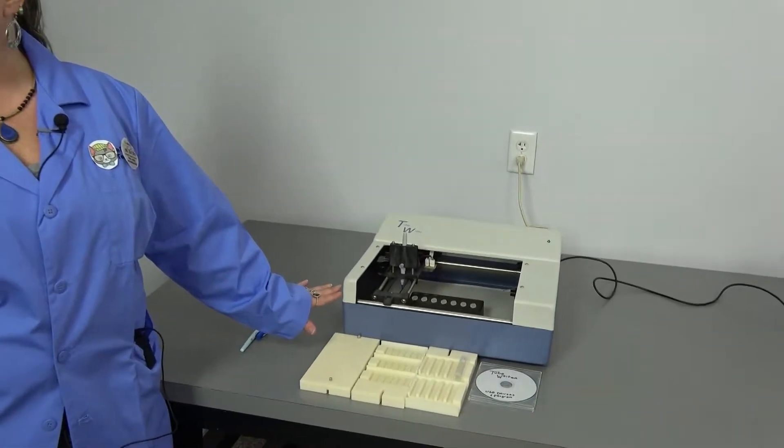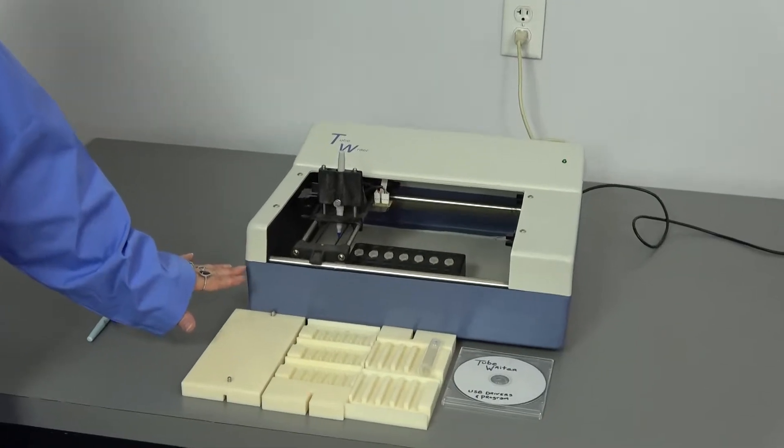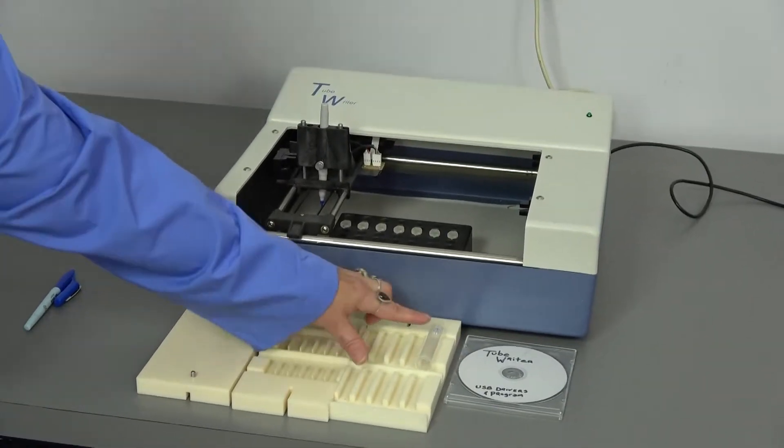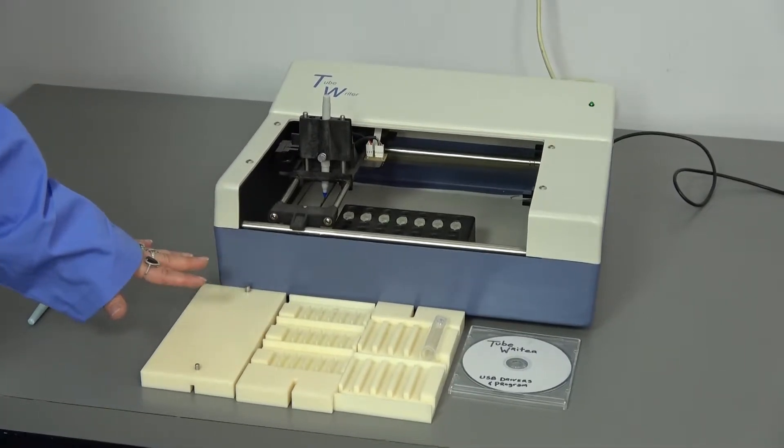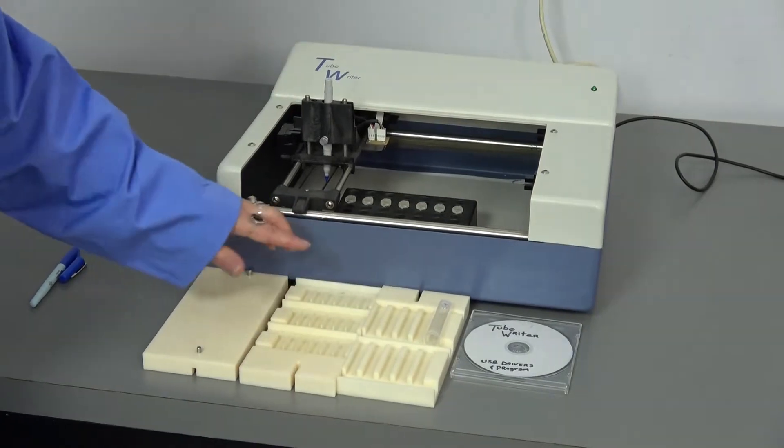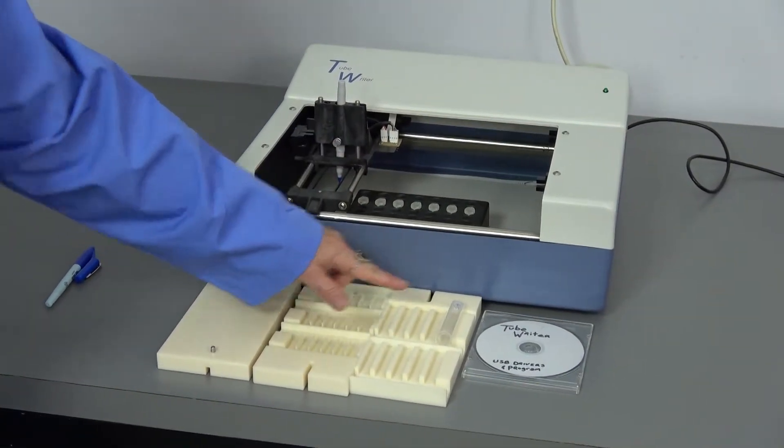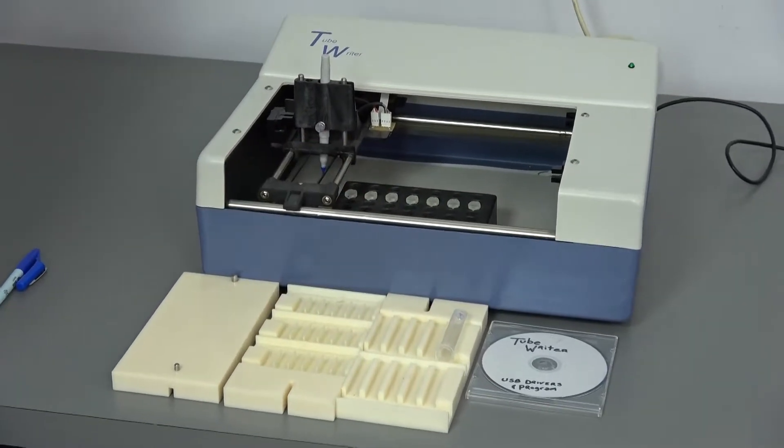This machine allows you to reliably and clearly label your tubes. It prints identifiers on the lids or the sides of tubes. You can program it to print the information that you want. You can change the racks so that you can put in microtubes or the longer tubes on the sides. We'll run it through a little demo.